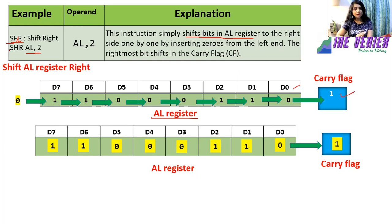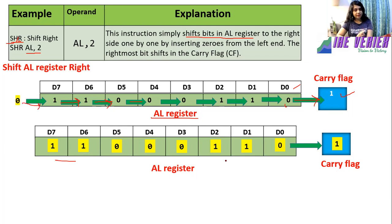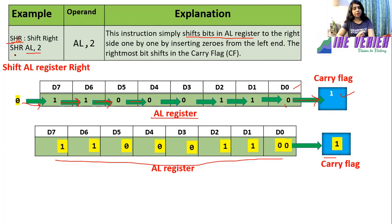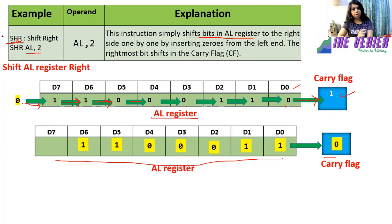After this instruction, every bit will shift towards the right, as shown by the arrows. Whatever is in bit D0 will enter into the carry flag. D7 then becomes empty, so a 0 will enter at the D7 position. So suppose this is the data available in AL register and this is carry flag — after execution of SHR, every bit is shifting towards right by one bit position and 0 will enter into D7.